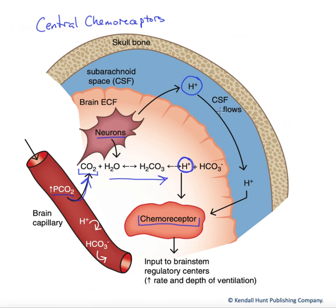Those ventricular spaces are filled with cerebral spinal fluid, which flows. In this way, CSF free protons can access the chemoreceptors found in the medulla. It's important to note that the CSF has very few proteins in it, and therefore has very low buffering capacity.